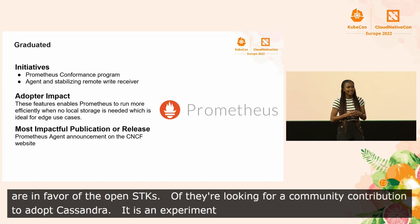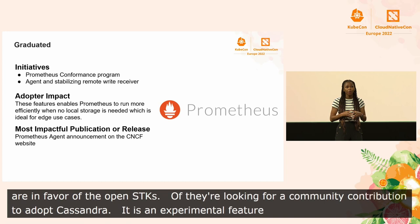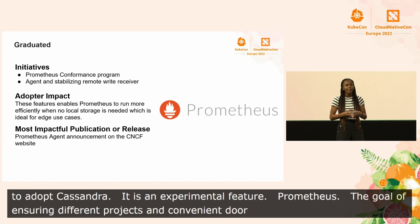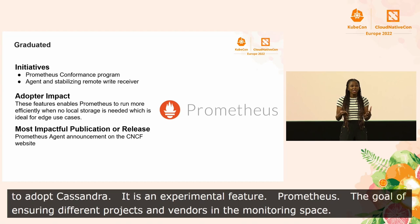Prometheus collects metrics from configured targets at given intervals, evaluates rule expressions, displays the results, and can trigger alerts when specific conditions are observed. The currently launched conformance program has the goal of ensuring interoperability between different projects and vendors in the Prometheus monitoring space. The Prometheus agent enables Prometheus to run more efficiently when no local storage is needed, and it's possible to run it on the edge as satellites pushing to Prometheus remote write compatible storage solutions like Thanos and Cortex.